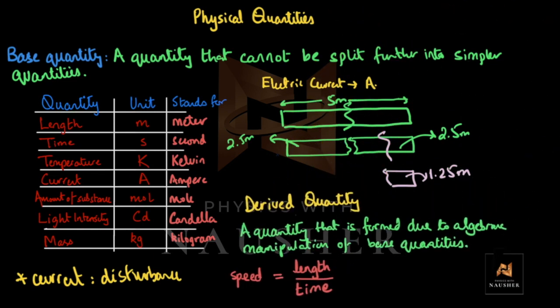Now, what is a derived quantity? A derived quantity is a quantity that is formed due to the algebraic manipulation of base quantities. Algebraic manipulation means you take any two quantities from the base quantity table and multiply or divide them as long as it makes sense. For example, length divided by time gives us speed — so speed is a derived quantity.